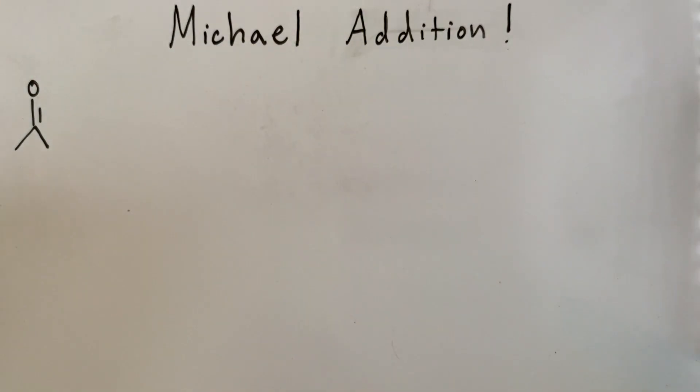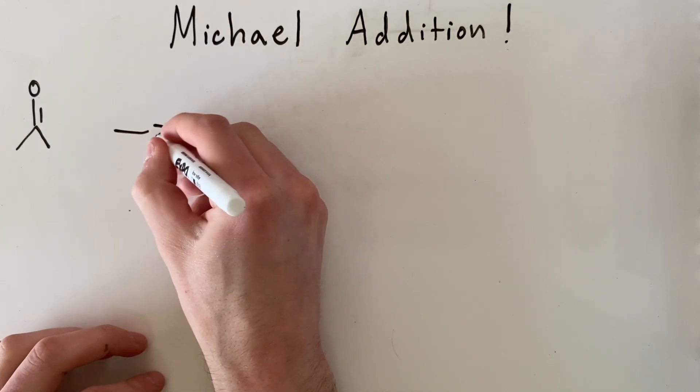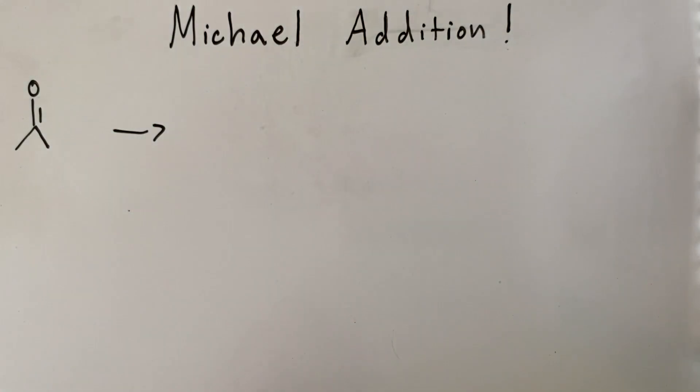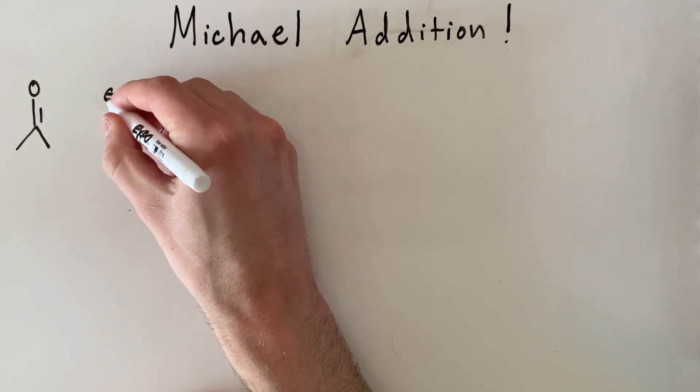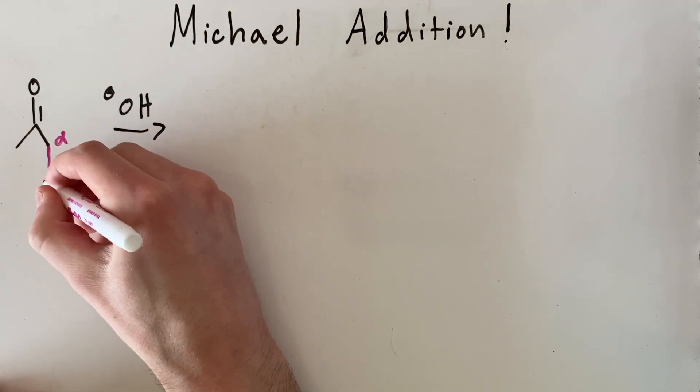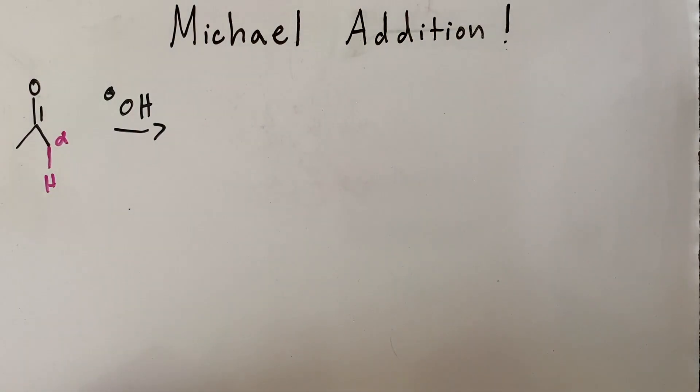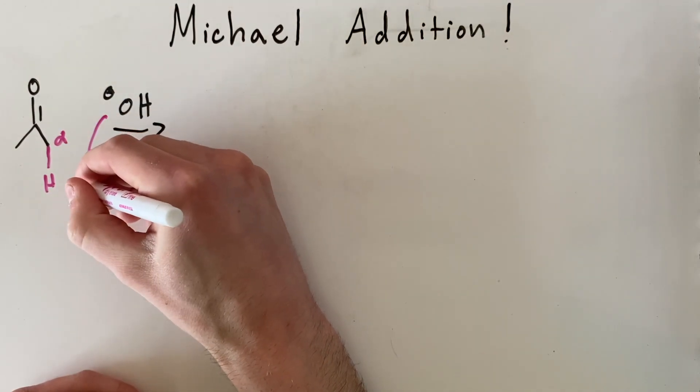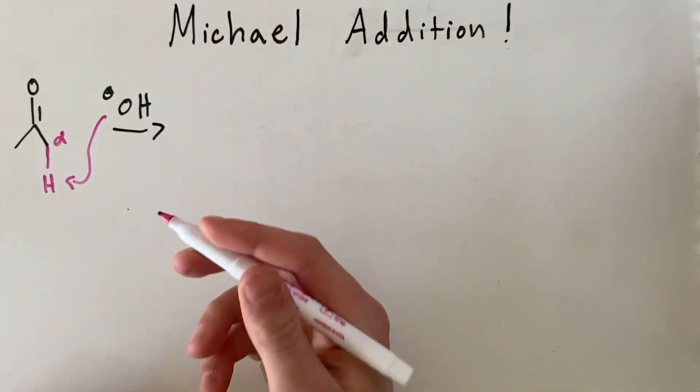What Arthur Michael did was took a molecule such as acetone and reacted it with a strong base. If we remember, this alpha carbon here contains hydrogens which are the most acidic. So this base is going to deprotonate the hydrogens at the alpha carbon.